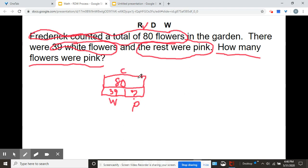So here we have a whole, part, part, right? We know the whole, 80. The part that we know is 39 white flowers. What we don't know is how many were pink. This is what's called drawing and labeling.